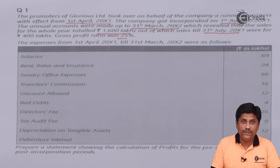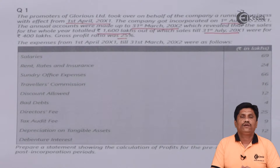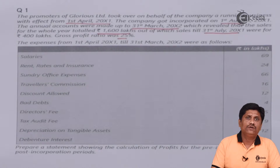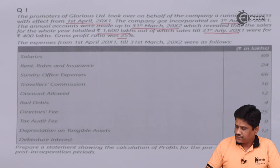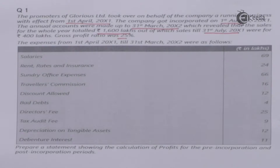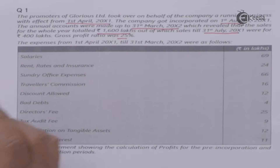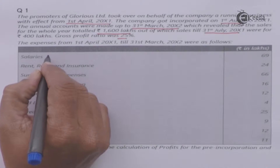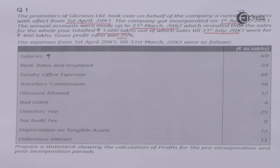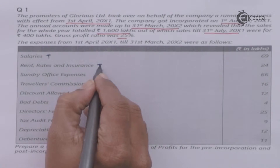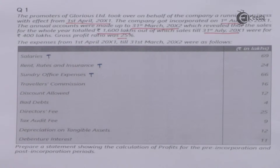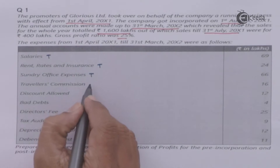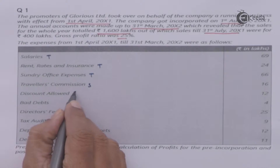No matter which question you are solving, keep two basic ratios ready: the sales ratio and the time ratio. In this example, we will work those out before the actual calculation. Various expenses are given and we need to decide how to split them. Salaries will be divided on time ratio, as salary is by default a fixed cost. Rent, rates, and insurance will also be divided on time basis. Sundry office expenses will be on time basis. Travelers commission is for sales purposes, so it will be allocated on sales ratio. Discount allowed will also be on sales ratio.